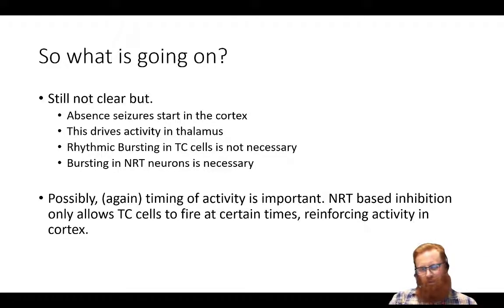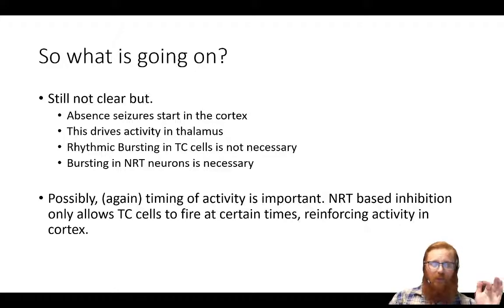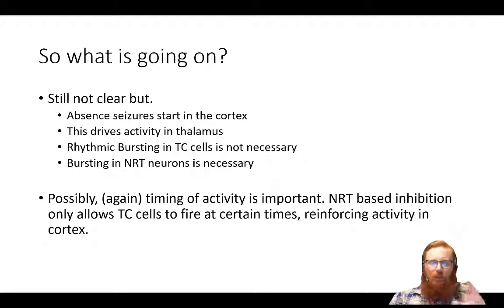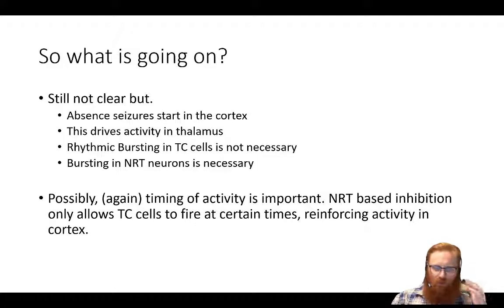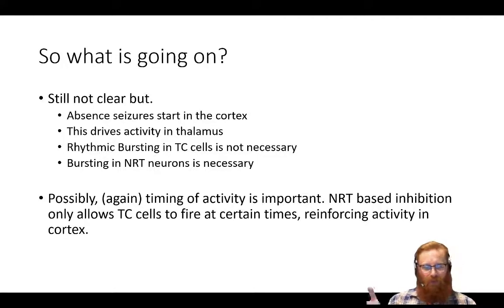We know that bursting in the NRT neurons is important. One big open question is whether NRT neurons inhibit each other. It's often difficult to prove something doesn't happen, and many influential people have claimed they do. The question remains: what makes the NRT neurons burst? It could be cortical input, but they need to be hyperpolarized for that. Maybe they can burst by themselves, leading to inhibition of thalamocortical cells and ultimately to loss of consciousness.